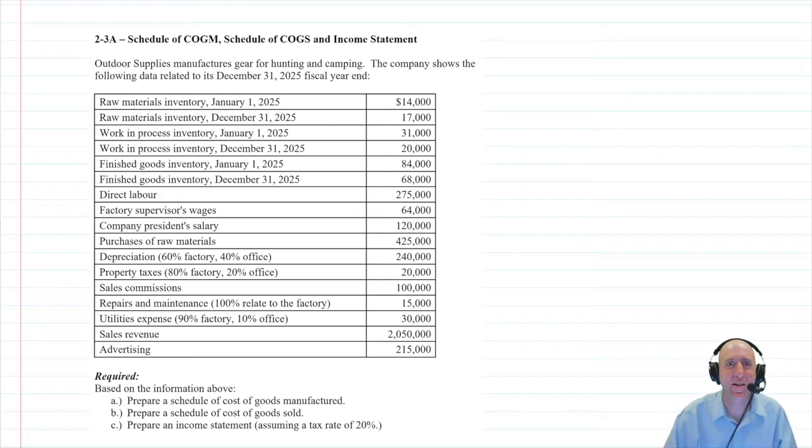In this series of videos, we are going to learn to prepare a schedule of cost of goods manufactured, a schedule of cost of goods sold, and an income statement. We'll do it over three videos and our first video is all about the schedule of cost of goods manufactured. So let's read through the problem. It says Outdoor Supplies manufacturers gear for hunting and camping. The company shows the following data related to its December 31st, 2025 fiscal year end. The first task we want to do here when we're faced with a big long list of accounts like this is just to classify them because we want to know what goes where.